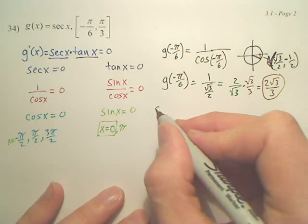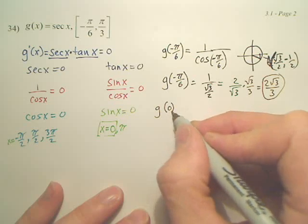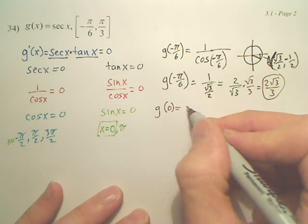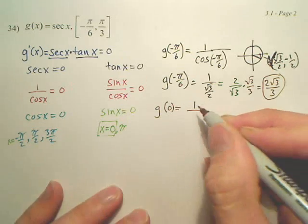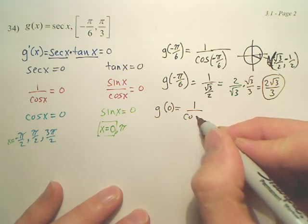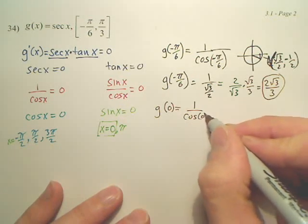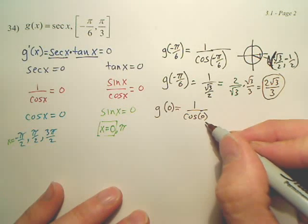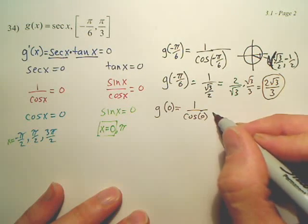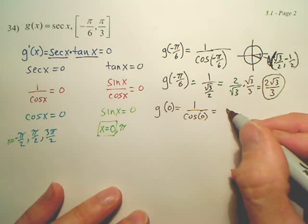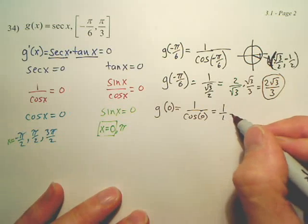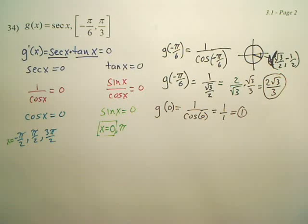Next one: g of zero. Hopefully this one's easier. Cosine of zero is one, so my answer is one over one, which is one.